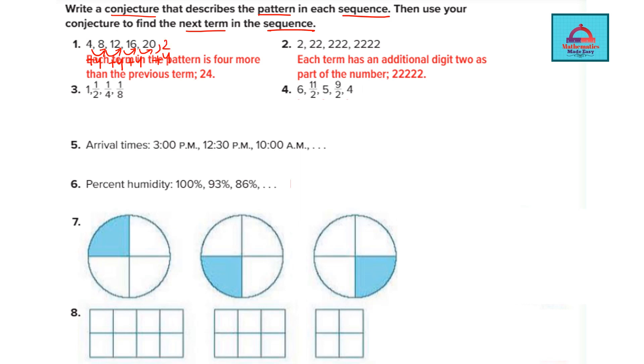So I can say the next term would be 24. Then you add 4, 28. Add 4, 32 and so on. So these are the next few terms of the sequence.